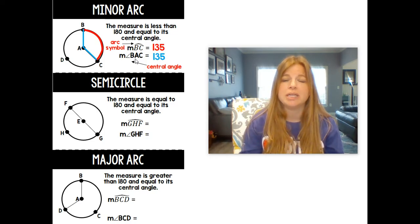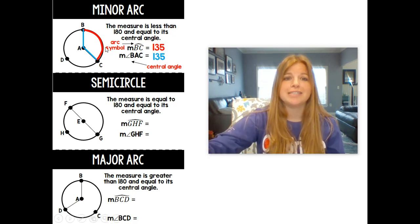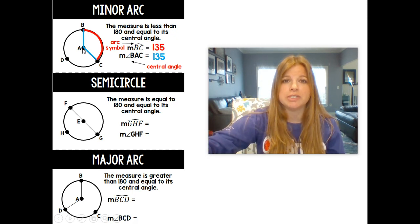Now notice the central angle is created from the center of the circle. The central angle is created from the center of the circle, and it's got the radii stretching out to the edge of the circle, and then it's creating that arc. This arc would be called the intercepted arc of that angle, and again, they are congruent to each other.